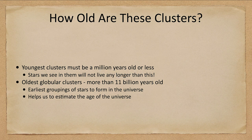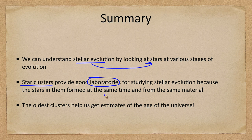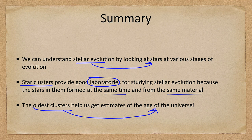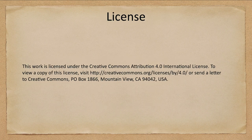In summary, we can study stellar evolution by looking at stars at various stages. Star clusters are our laboratories for studying stellar evolution because they formed at the same time and from the same material. The oldest globular clusters can help us get estimates of the age of the universe. That concludes this lecture on testing stellar evolution models — we'll be back next time for another topic in astronomy. Have a great day everyone, and I will see you in class.